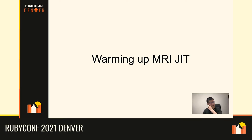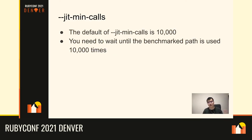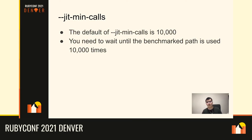The next section is about warming up MJIT. First, let me introduce the --jit-min-calls option. This is the minimum number of calls required to make a method recognized by the JIT compiler. The default since Ruby 2.7 is 10,000. So if you use Ruby 2.7 or newer, you have to call the same method 10,000 times before the JIT compiler will compile it. If your benchmark doesn't run a method 10,000 times, it doesn't make sense as a benchmark for MJIT.